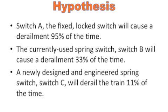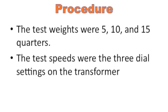Switch B will derail the train 33% of the time, and switch C will derail the train 11% of the time. The weights to be tested were 5, 10, and 15 quarters, and the speeds were the three dial settings on the transformer.